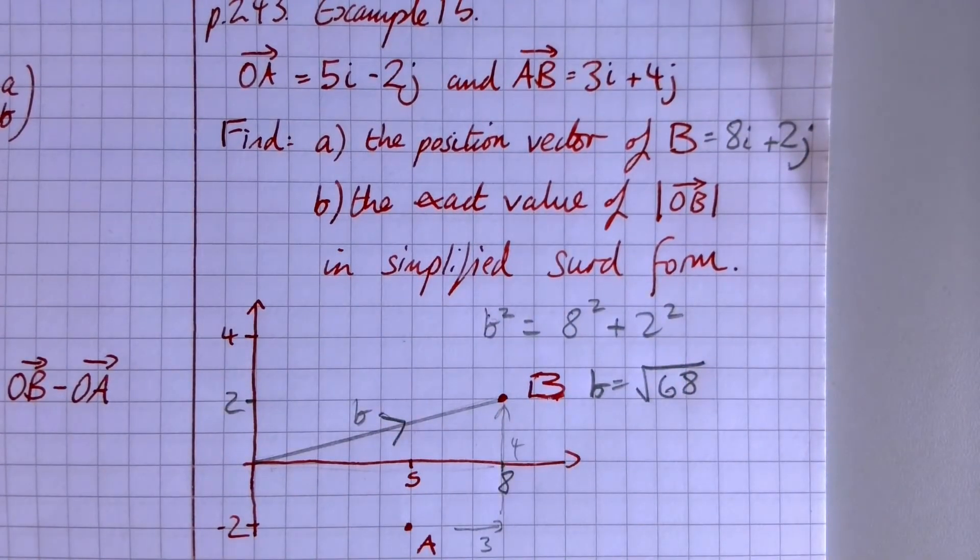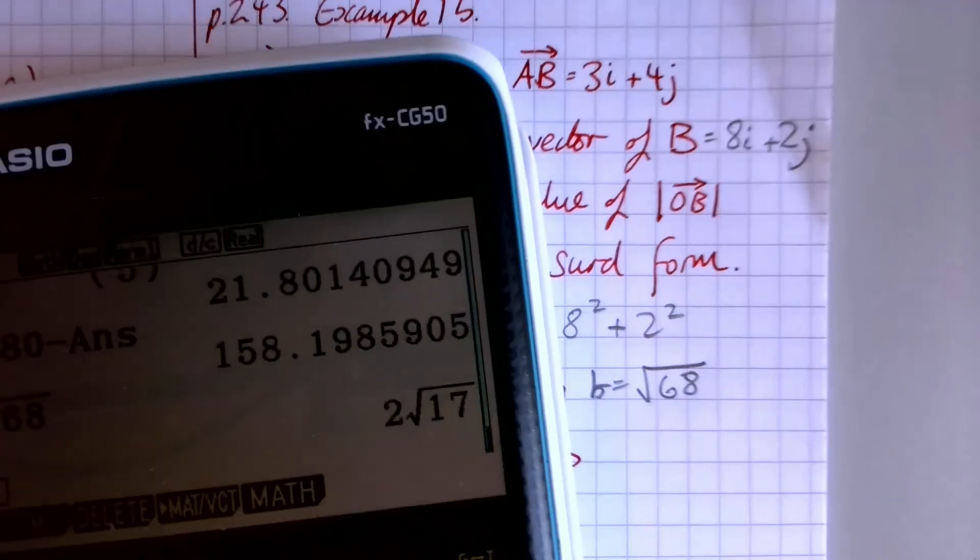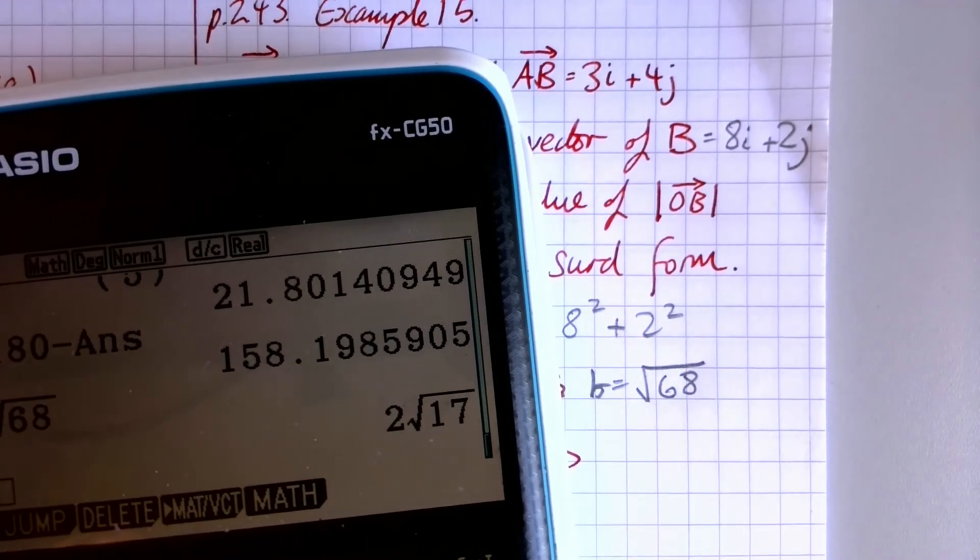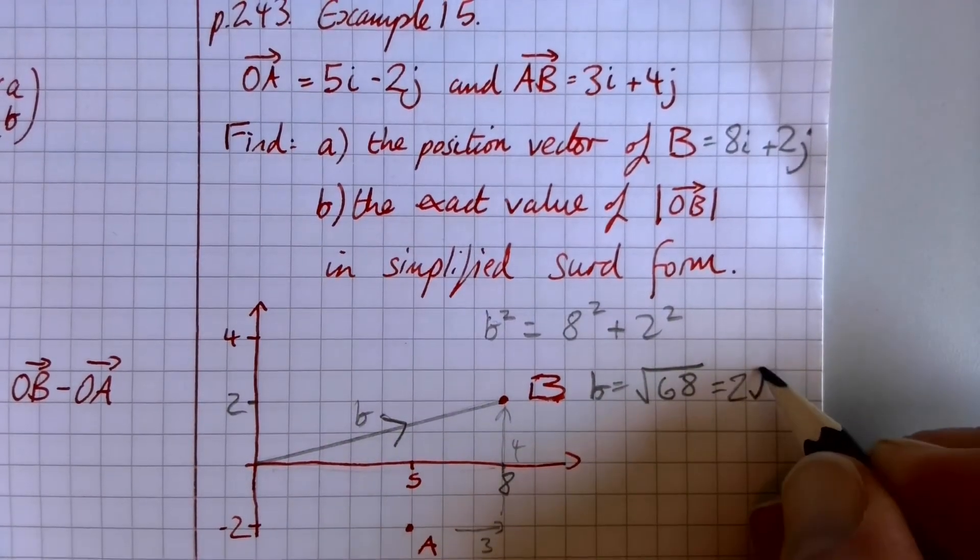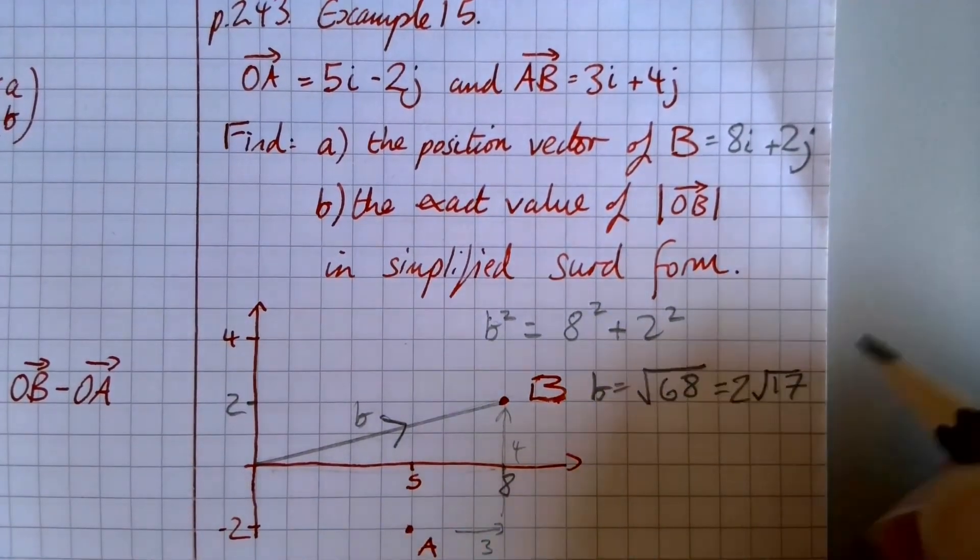And then all we need to do is simplify that, which I could do by thinking about whether or not 4 goes into it. I think 4 is going to be the biggest square number. Or I could just say, put it in the calculator. What's the square root of 68? And it is 2 root 17. So yeah, square root. So that is our final answer.